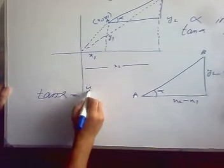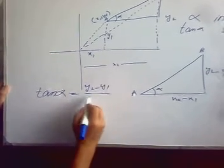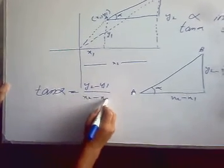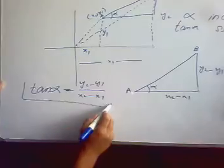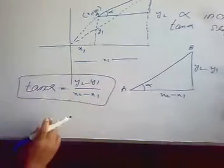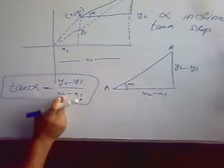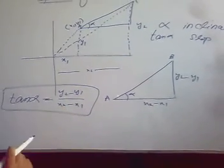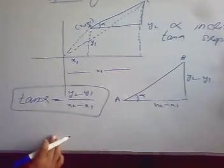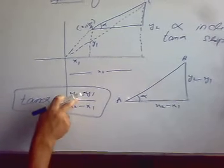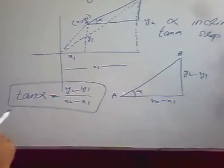And that will be y2 minus y1 over x2 minus x1. So just to remember, we can also say that this is actually the change in y divided by change in x, or sometimes it is also considered the change in rise divided by change in run.